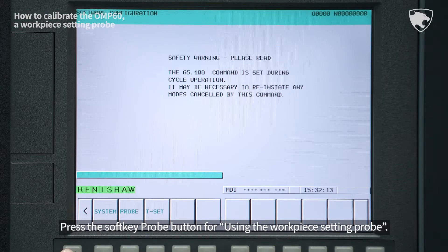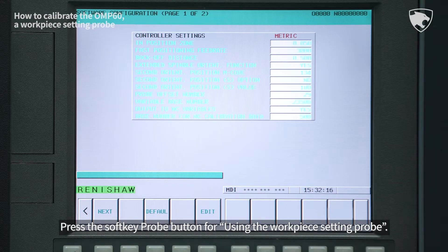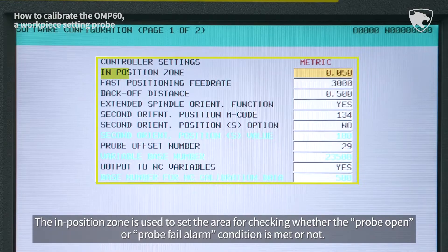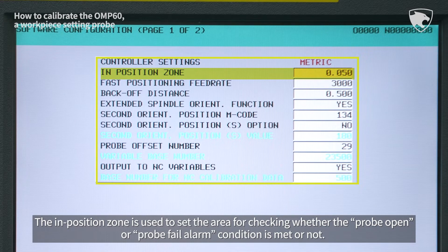Press the soft key probe button for using the workpiece setting probe. The in-position zone is used to set the area for checking whether the probe open or probe fail alarm condition is met or not.